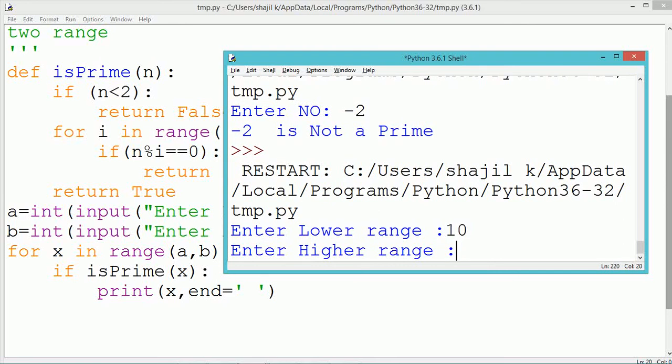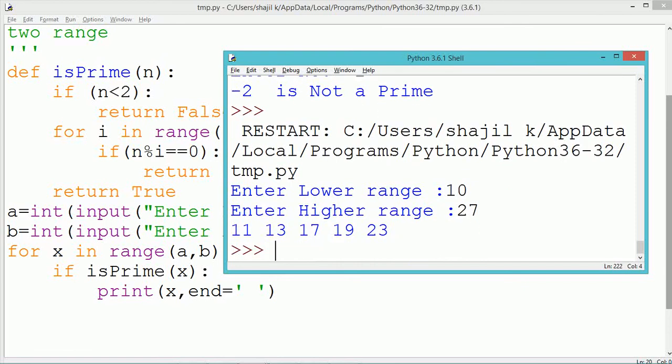So that number will be printed by using the print method. In case isPrime is returning the value false, we do nothing.